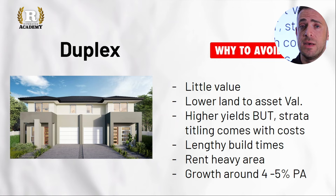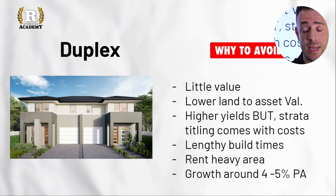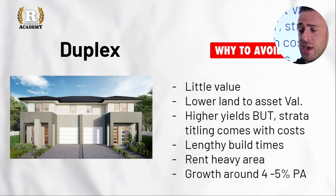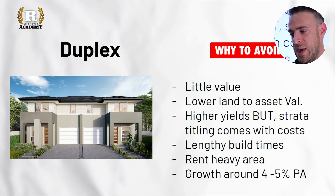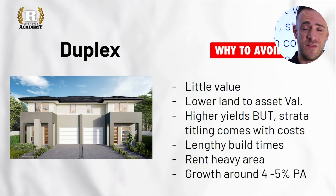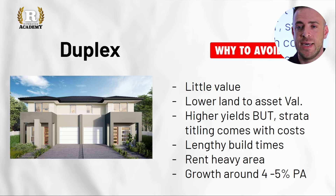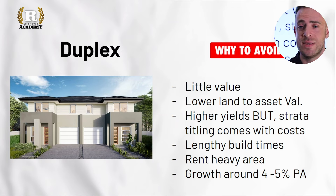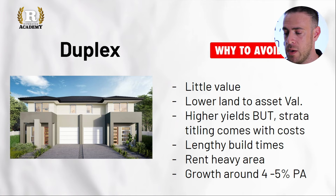The build time on a duplex — whether two years or 18 months — comes at the expense of foregoing compounding capital growth in another asset, along with rental returns and payments you're making through construction stages with no income coming in. Growth rates tend to be around that townhouse range of four to five percent. For me it's not quite good enough on yield, not quite good enough on capital growth — I want something exceptional in one or both, not just average.